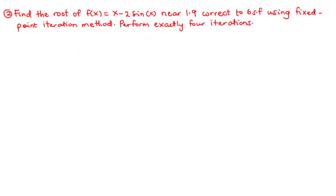Let's take the second example. We are going to find the root of f(x) = x - 2sin(x) near 1.9, correct to 6 significant figures using the fixed point iteration method, and we are going to perform exactly 4 iterations.